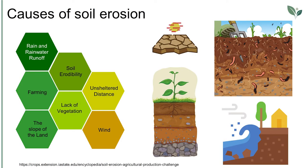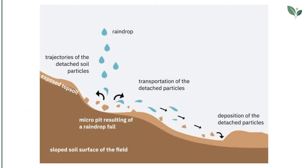Let's see now the main causes of soil erosion: rain and rainwater runoff, farming, the slope of the land, soil erodibility, lack of vegetation, unsheltered distance, and wind. In this slide, you can see the process of soil erosion during rainfall. The raindrop creates micro-pits in which the trajectories of detached soil are falling into, and with the flow of the water, they are moving forward, causing the deposition of the detached soil particles.